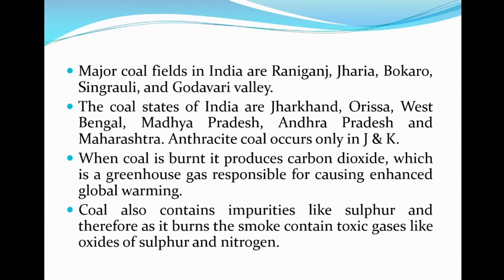When coal is burnt, it produces carbon dioxide, which is a greenhouse gas that increases the earth's temperature and causes global warming. Coal also contains impurities like sulphur, and therefore as it burns, the smoke contains toxic gases like oxides of sulphur and oxides of nitrogen, which cause acid rain.